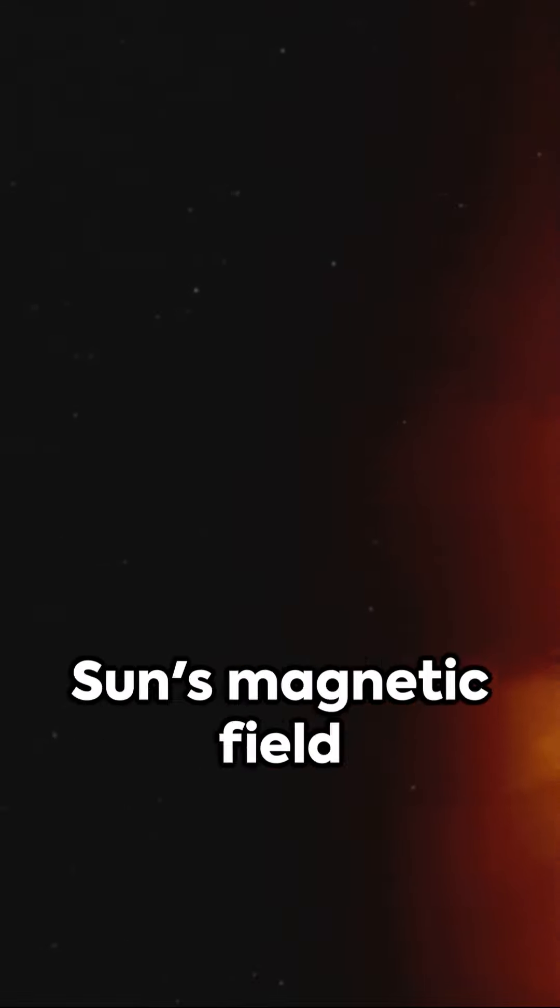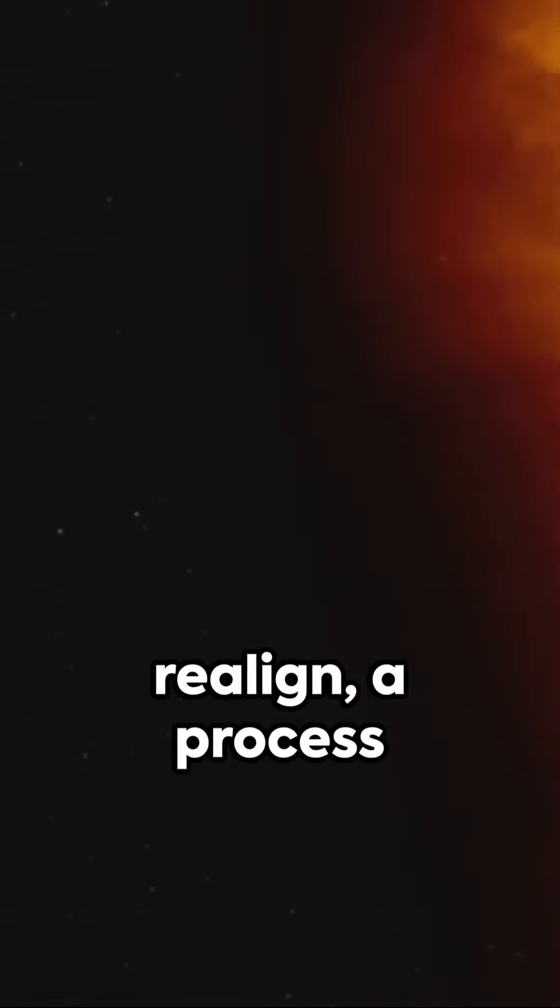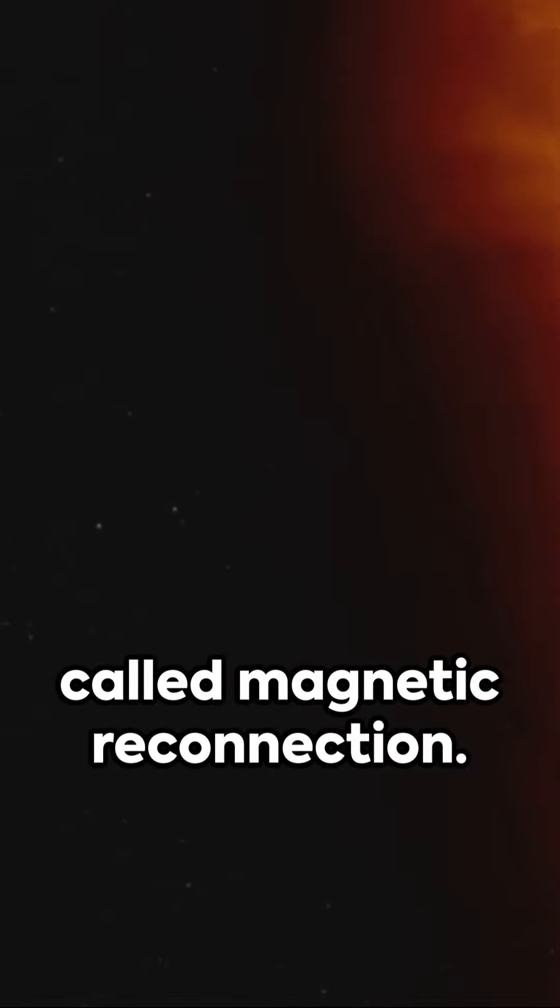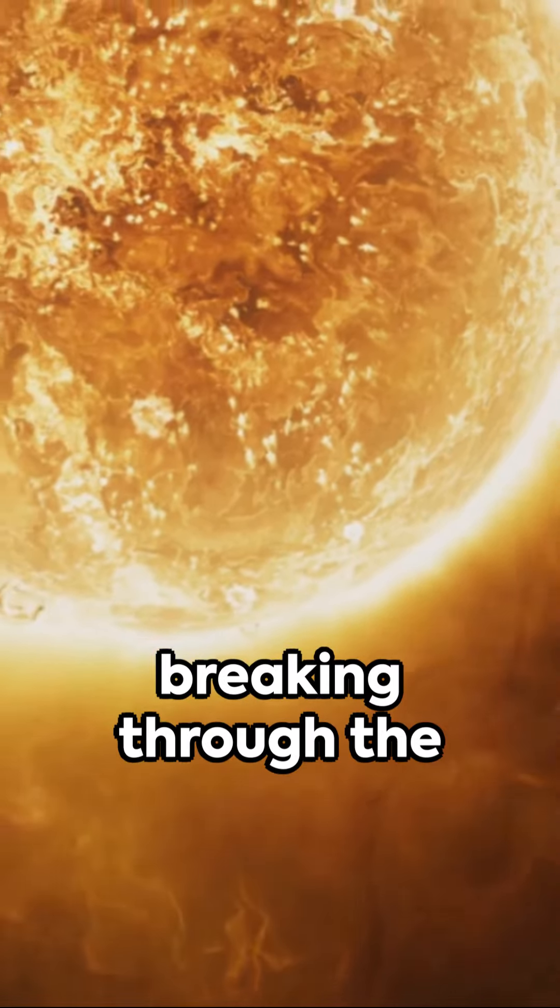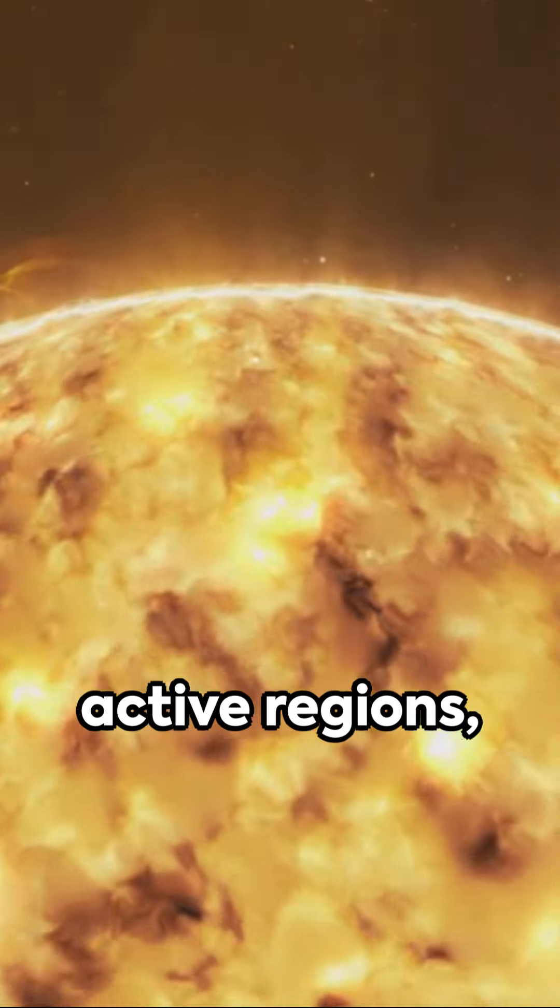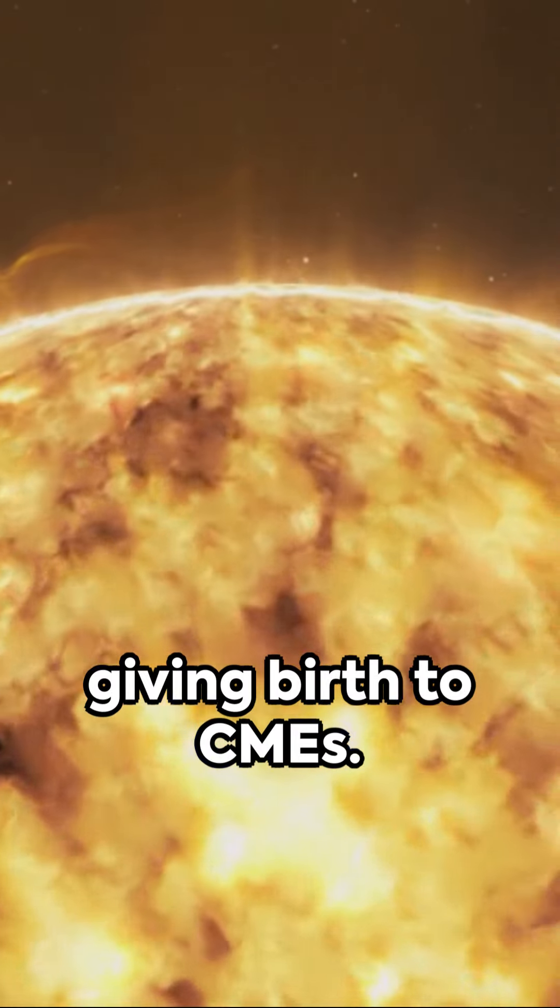Picture this: The sun's magnetic field lines twist and realign, a process called magnetic reconnection. When these lines tangle, they create powerful localized magnetic fields, breaking through the sun's surface at active regions, giving birth to CMEs.